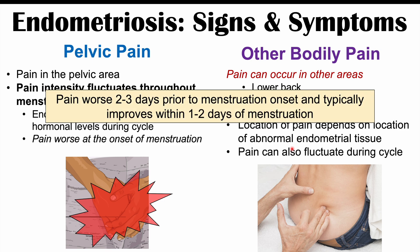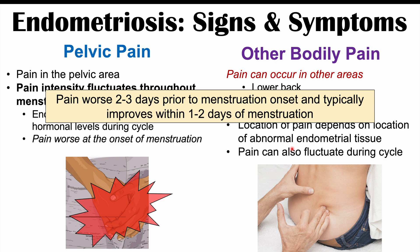More specifically, with regards to the fluctuation of pain: pain is often going to be worse two to three days prior to menstruation onset, and then it typically improves within one to two days of menstruation. So pain is worse at the onset of menstruation but improves a couple of days after menstruation has started. This is the typical pattern of pain, and what will often be noted is that this pain can get worse over time.